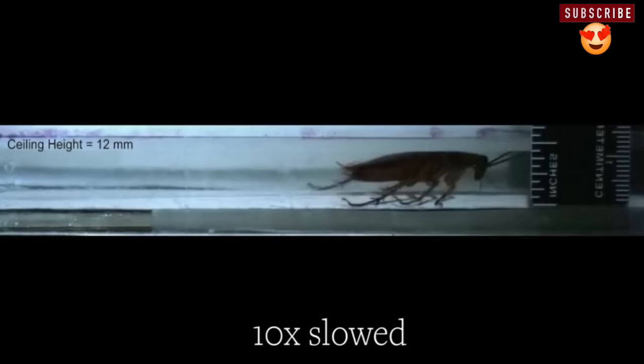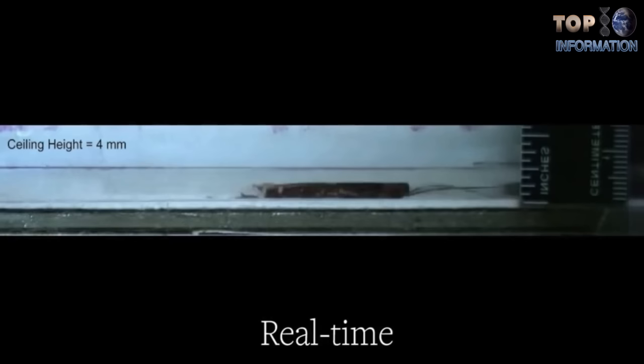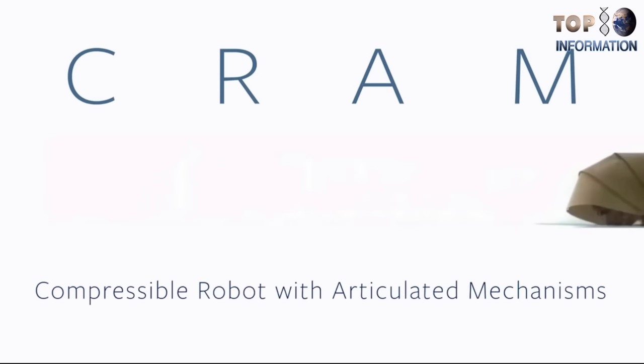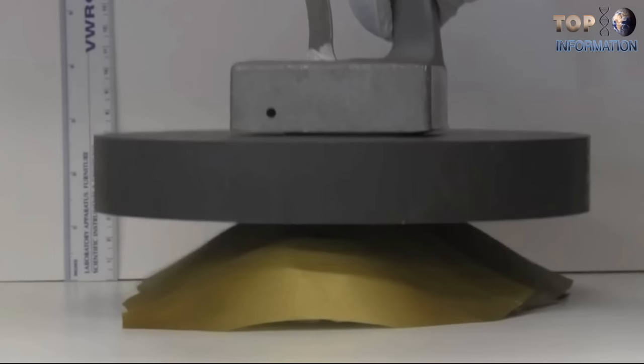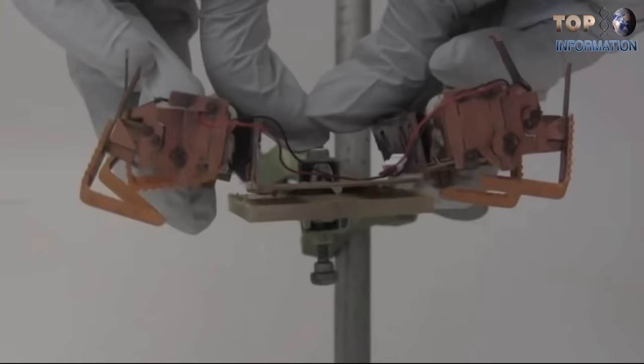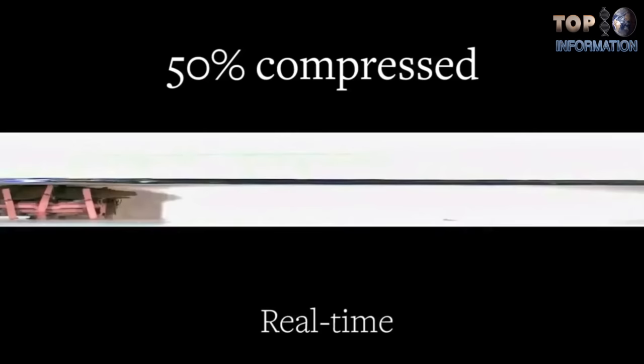UC Berkeley researchers have discovered the secrets of how cockroaches achieve those astounding Houdini-like contortions. And now, they're using this discovery to build robots with those same extraordinary powers. Inspired by this awesome skill set, the researchers built CRAM, a compressible robot with articulated mechanisms. The prototype has a segmented, pliable cockroach-like shell. CRAM is able to sprawl out and run using other parts of its legs instead of its feet.